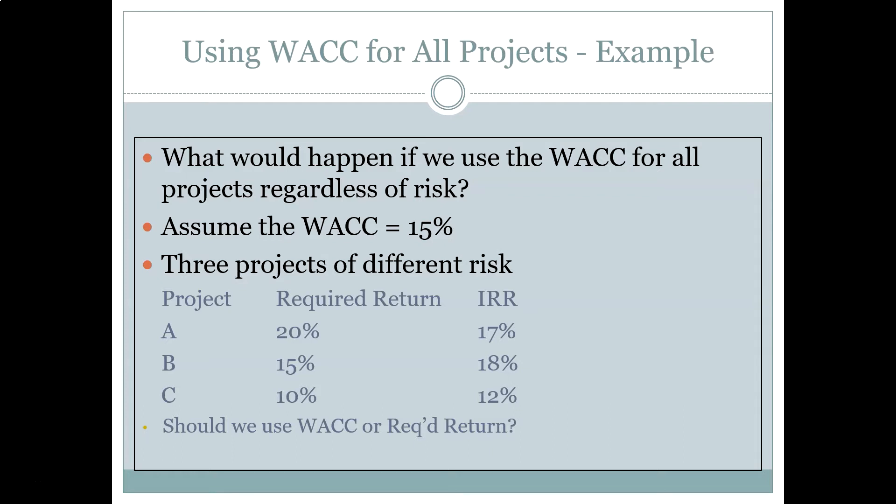Look at how this can negatively impact the firm. We want to go back to our Chapter 9 intuition and remember the internal rate of return rule, which says we should accept a project when the internal rate of return of the project is greater than the required return for the firm. In other words, the project provides more return than the cost of capital — the required return.